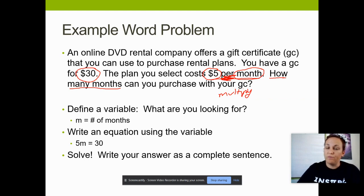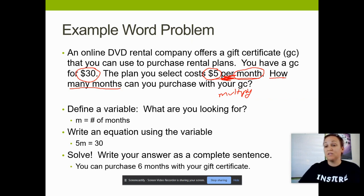So in this problem, the question says how many months can you purchase with your gift card? So now you want to restate that as a sentence. I can purchase six months with my gift card. Or you can purchase six months with your gift card. Notice that I put my answer, which was six, because that's 30 divided by five. And then I have my units, it's months. And I basically just rewrote the entire question. So I didn't just say six months. I wrote it in a nice sentence. And when I read the sentence, I should be able to tell what the question was asking. So you want to make sure that you're including all the information from the question.